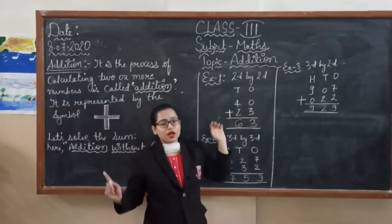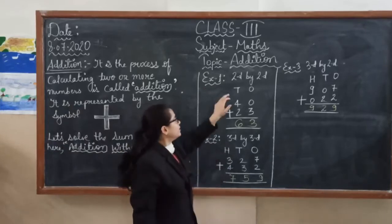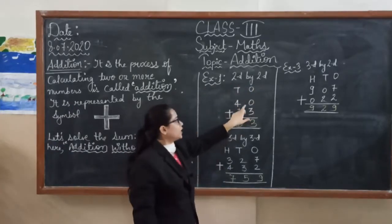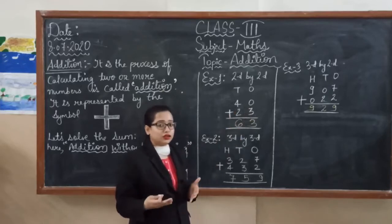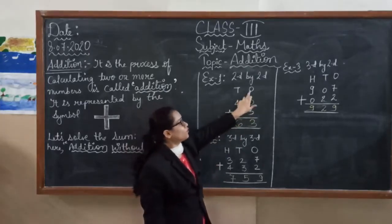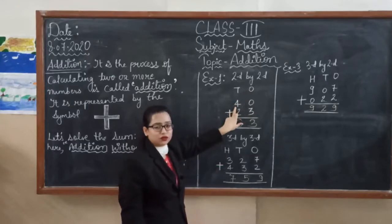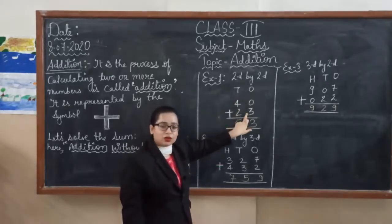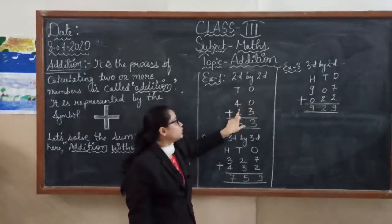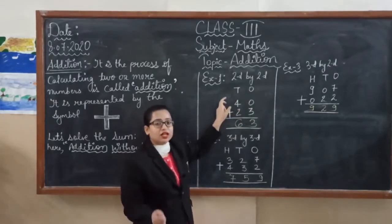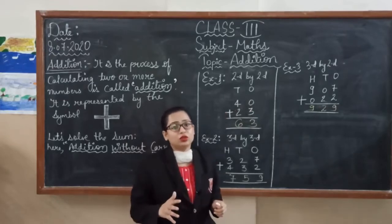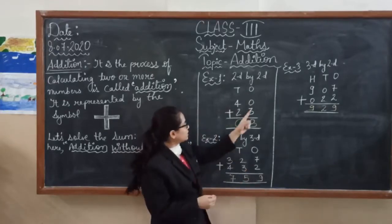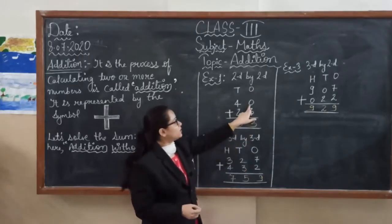Look at here, the example of addition without carry. This is two digit by two digit. 40 is a two digit and 23 is also two digit. Firstly we should know the place values of these numbers. Zero stands for one's place and four stands for ten's place. Three stands for one's place and two stands for ten's place. Always we have to start from the one's place. Zero plus three equals three.